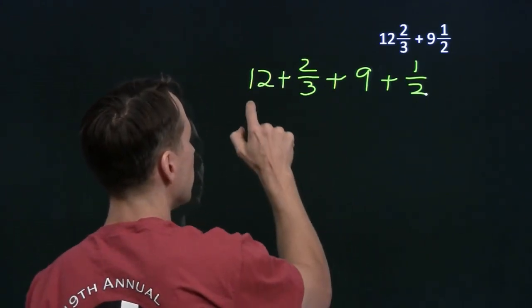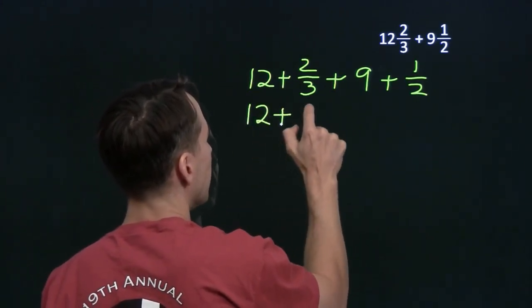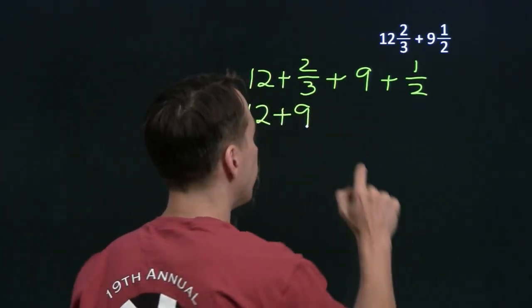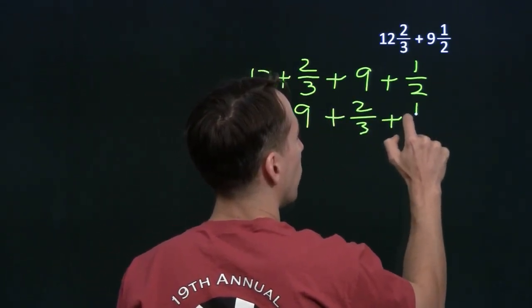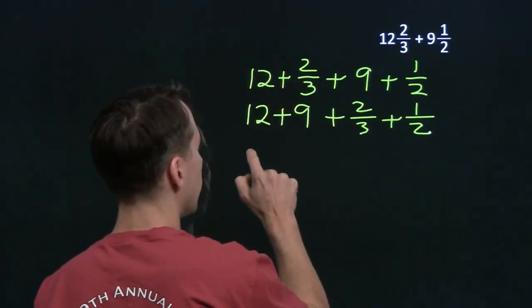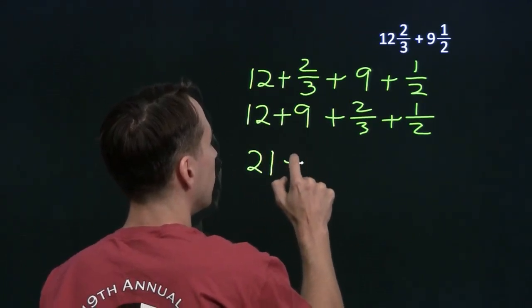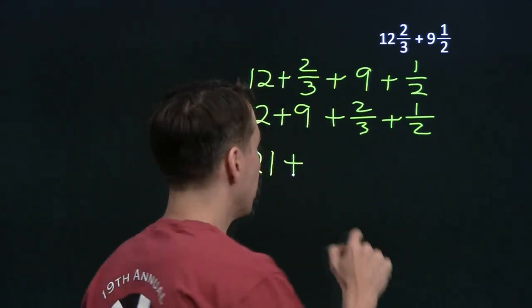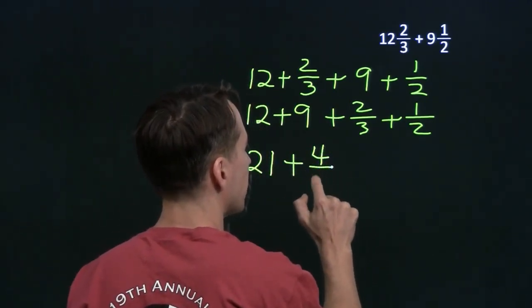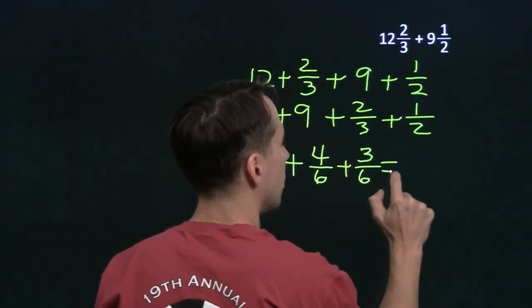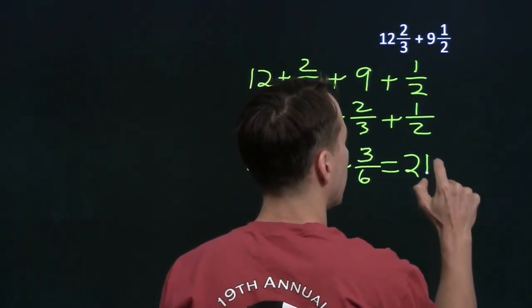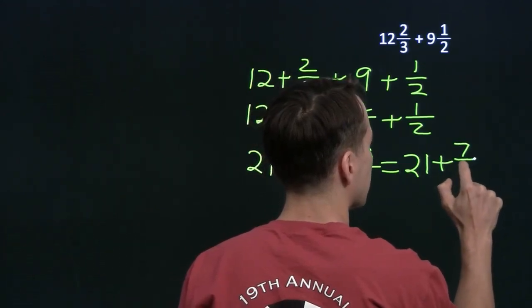And we can add up the two integers, 12 plus 9, and then we add our two fractions, plus 2 thirds plus 1 half. 12 and 9 of course is 21. And then the common denominator here is just going to be 6. 2 thirds is 4 sixths. 1 half is 3 sixths. So that gives us 21 plus 7 sixths.